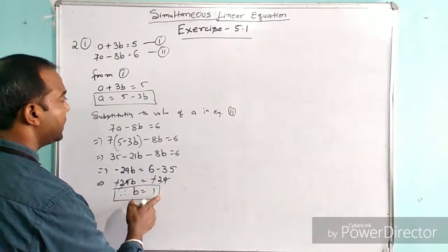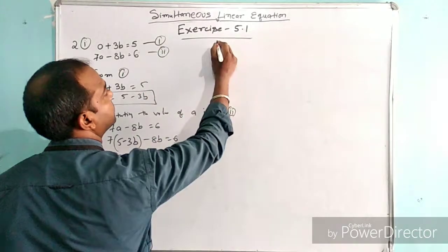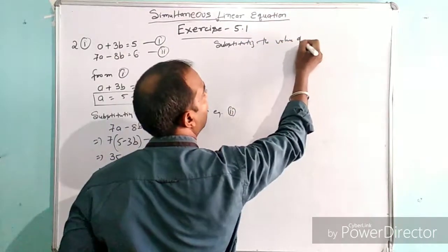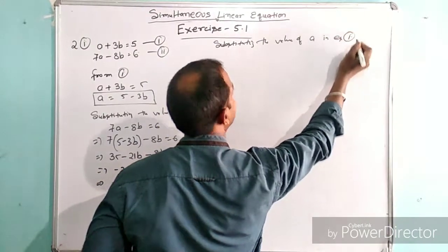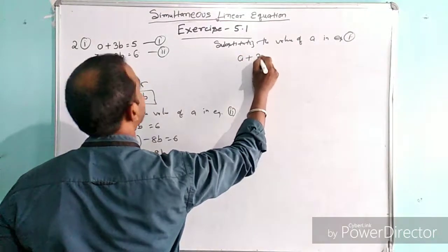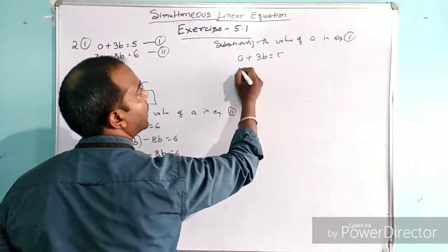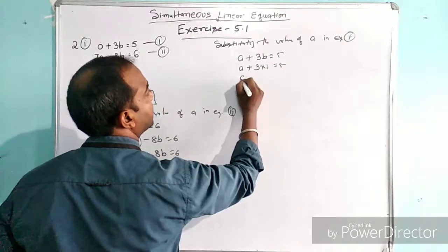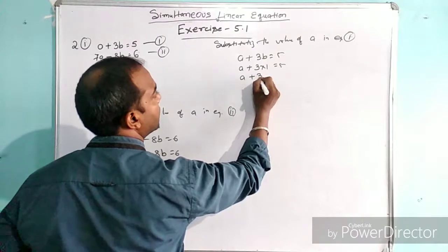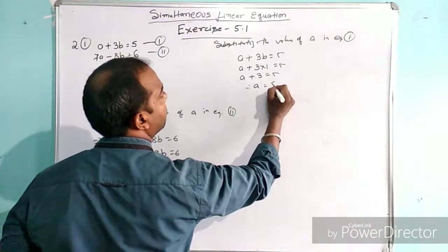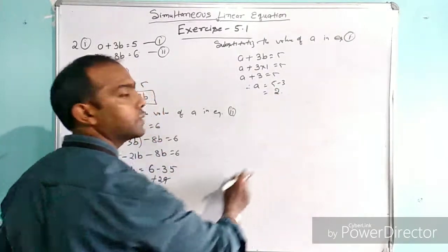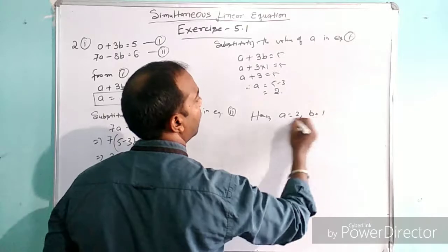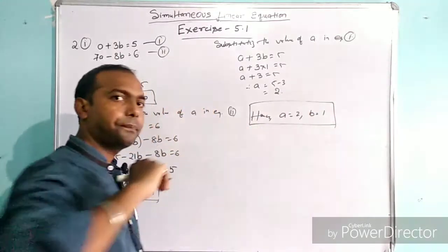Now we substitute the value of b into equation number 1 to find a. Equation 1 is a plus 3b equal to 5. Putting b equal to 1: a plus 3 times 1 equal to 5, so a plus 3 equal to 5, therefore a equals 5 minus 3, which is equal to 2. Hence a equals 2 and b equals 1. This is our solution.